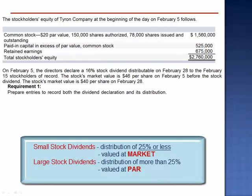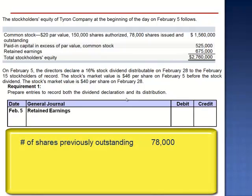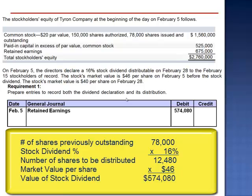A small stock dividend increases the number of shares by 25% or less, so this is a small stock dividend — it will increase the number of shares outstanding by 16%. Small stock dividends are valued at market. Debit retained earnings for the market value of 12,480 shares. 78,000 shares previously issued and outstanding multiplied by 16% equals 12,480 new shares to be issued. When we multiply 12,480 new shares by the market value on the date of declaration, $46 per share, the value of this stock dividend is $574,080.